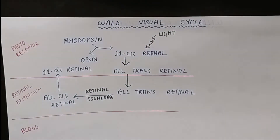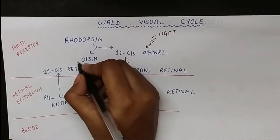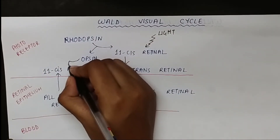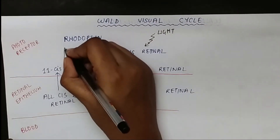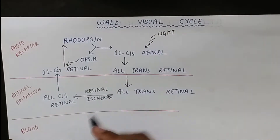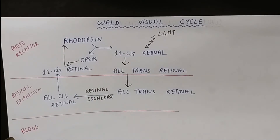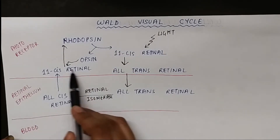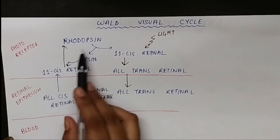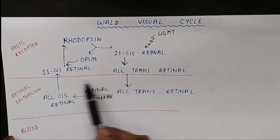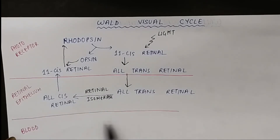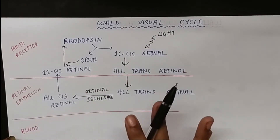The 11-cis retinal then mixes with opsin to form rhodopsin again, completing the Wald Visual Cycle. However, this short pathway does not always happen completely.